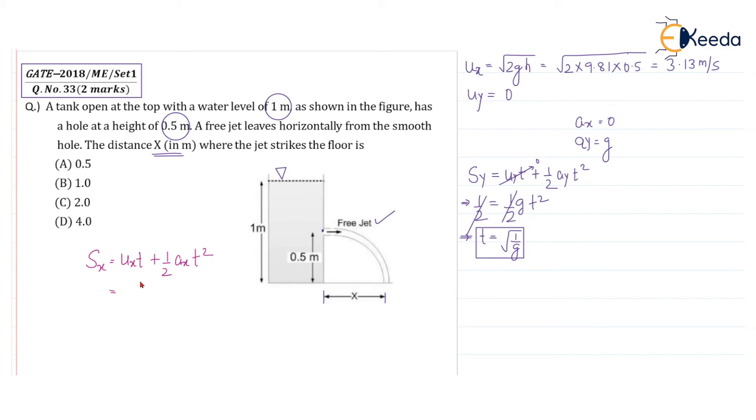ux is already calculated, 3.13 into time, time is root of 1 by g, 9.81 you can write. ax value, you can see, it's a free jet, no acceleration in x direction, this complete term is 0. So this is the final equation, 3.13 into root of 1 by 9.81, if you calculate this, you will be getting exactly equal to 1 meter.